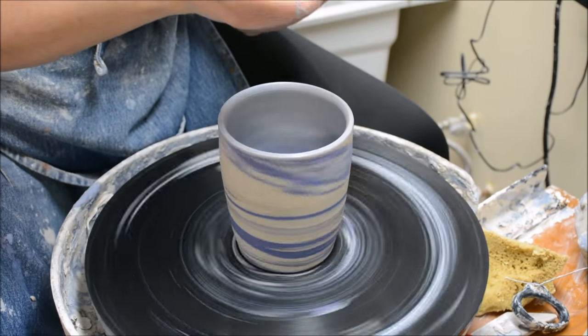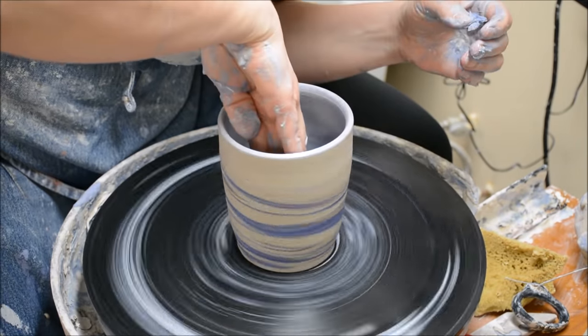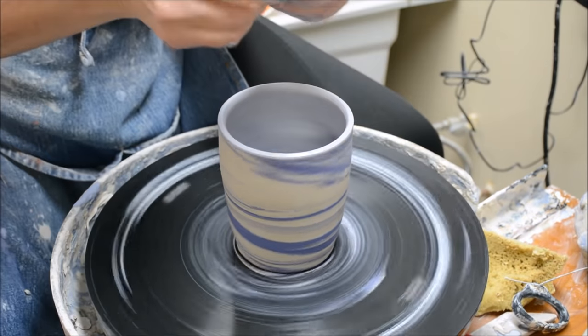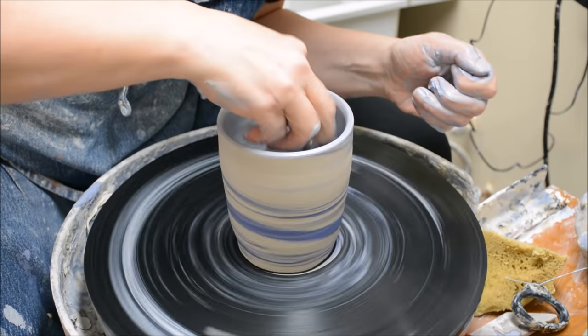Ribbing the interior of a cup is harder because of course you've got that corner down in there. But I am trying to get rid of as much of the slip as I possibly can.